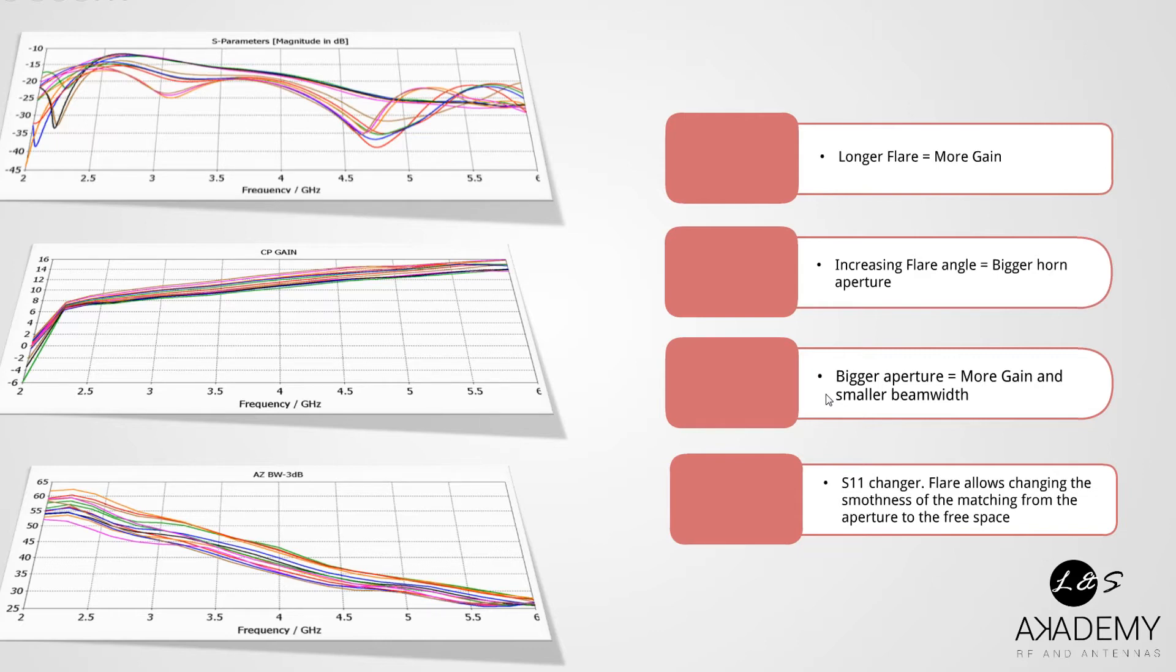In relation with S11 and the matching, as you can see here, S11 is changing. So the flare allows changing the smoothness of the matching from the aperture to the free space. In other words, the flare is like a part of the antenna designed to adapt the cavity—the impedance of the cavity—to the impedance of the free space where the signal will propagate.